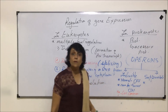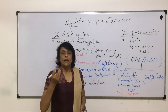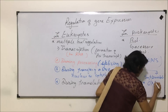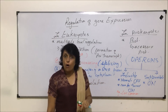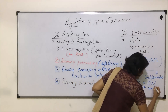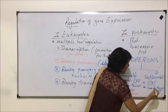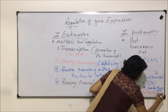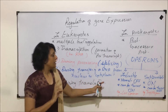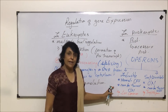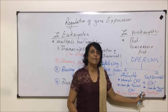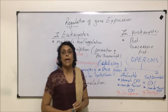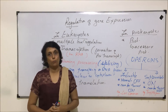A suppressible operon in normal conditions remains in the on mode — it is continuously transcribed and whatever needs to be synthesized gets synthesized at a regular level. It can be turned off as and when required. The example of this is the tryptophan operon. We will discuss both operons in detail, starting with the lac operon first.